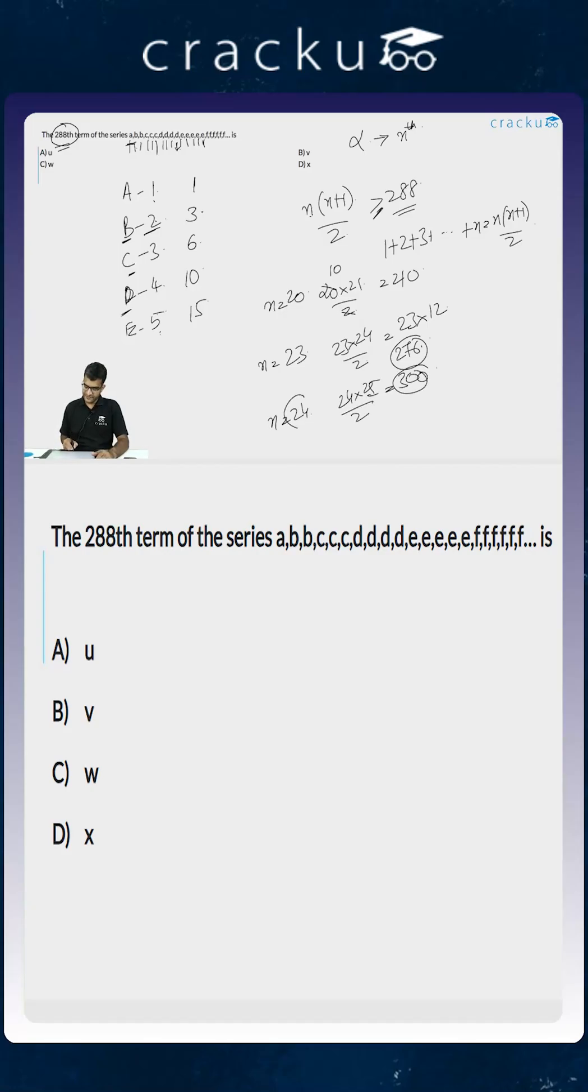So the 24th alphabet will be the 288th term of the series. The 23rd alphabet's last term will be the 276th term of the series. The last term of the 24th alphabet will be the 300th term of the series. So from 277 till 300, the alphabet which is repeating is the 24th alphabet, which is x.